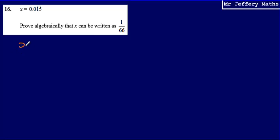So in order to do this, the first thing we're going to do is rewrite the first bit of information that we're given: x is equal to 0.015 recurring.